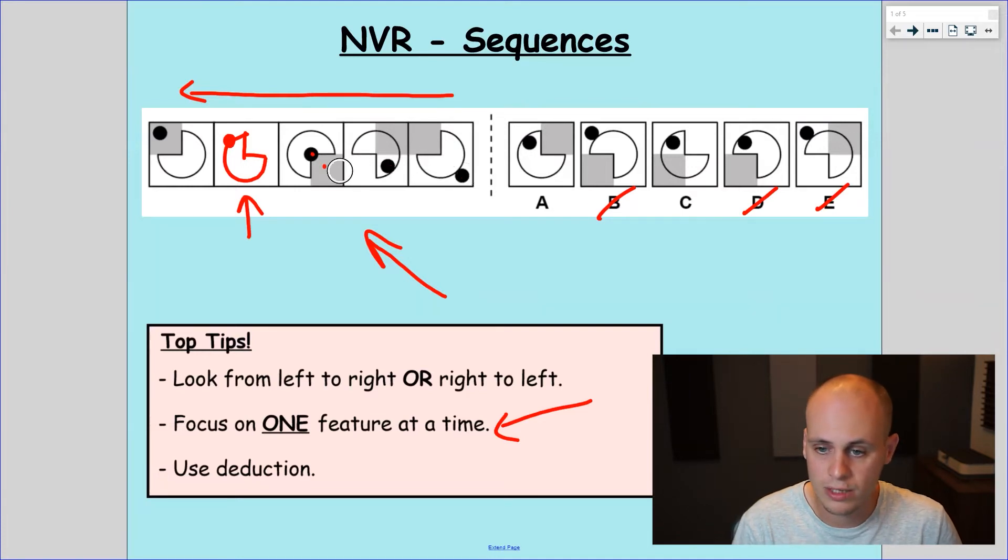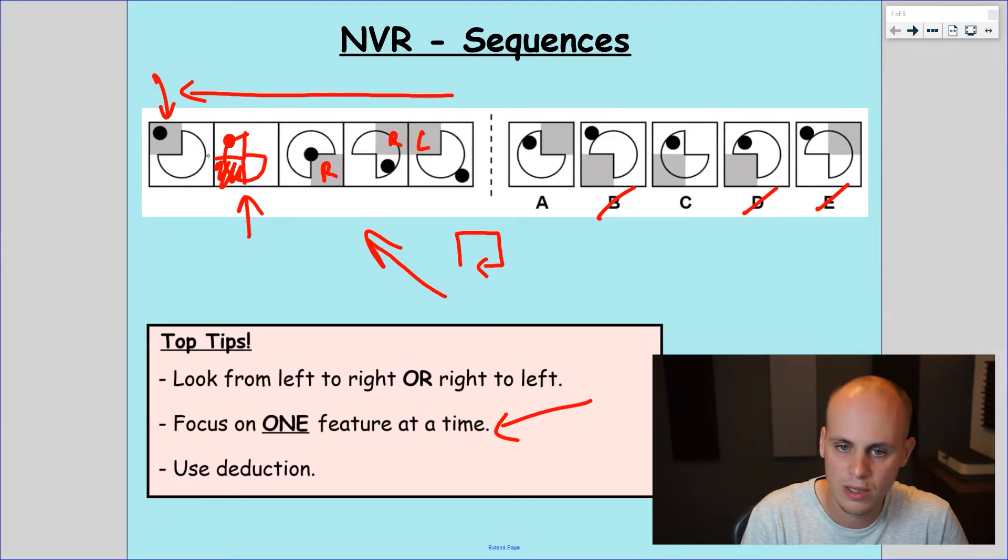The final feature that we haven't looked at, if I get rid of my markings here, is the gray square. So let's try and work out what that's doing as well. So it's in the top left. Then it's in the top right. Then it's in the bottom right. So clearly, again, it's rotating around the square corners like this. So it goes left, right, right clockwise. The next logical place for it to be is here. So we want a nice grayed out square in the bottom left. It makes sense with our sequence because look, it comes full circle around back to the top left. So bottom left is what we're looking for. We've only got two answers. It's not A, but it is C.